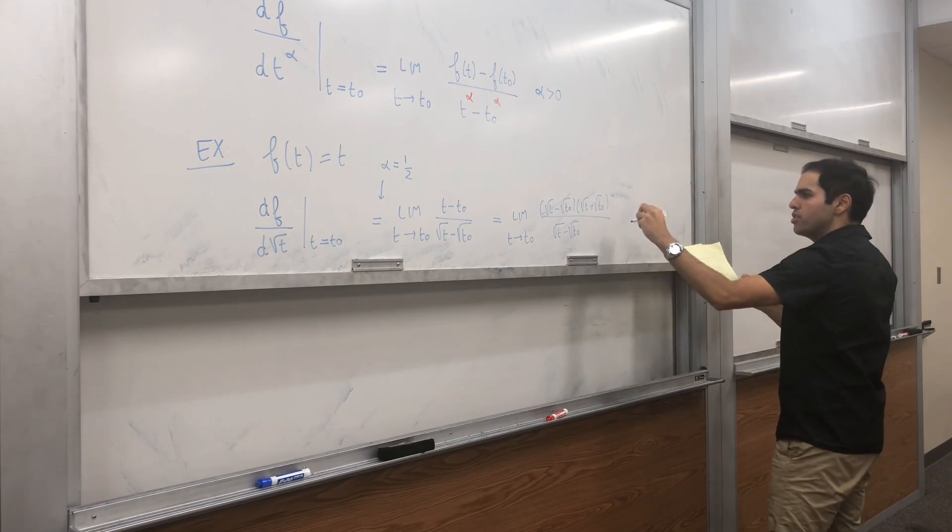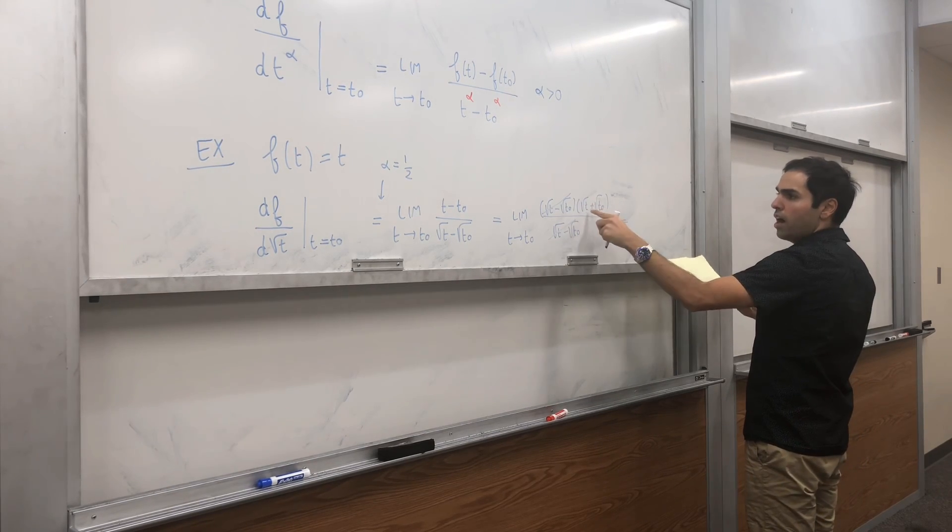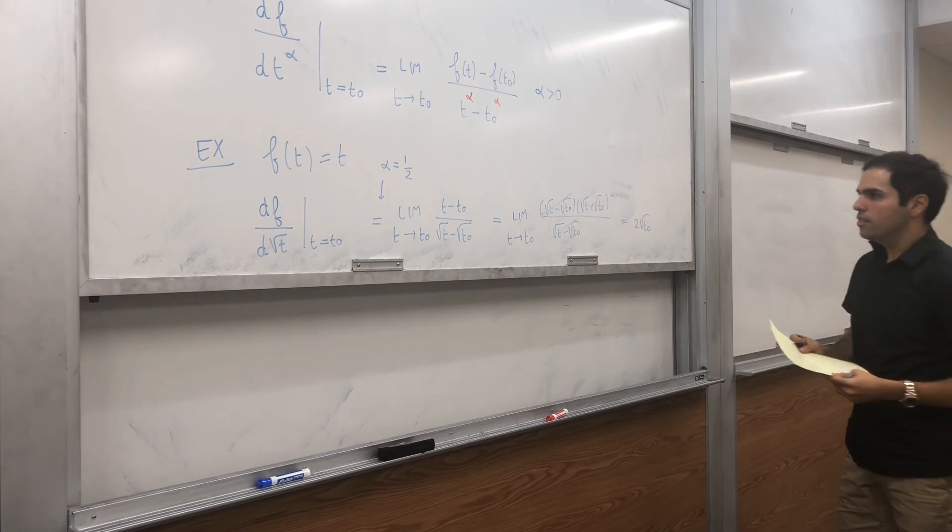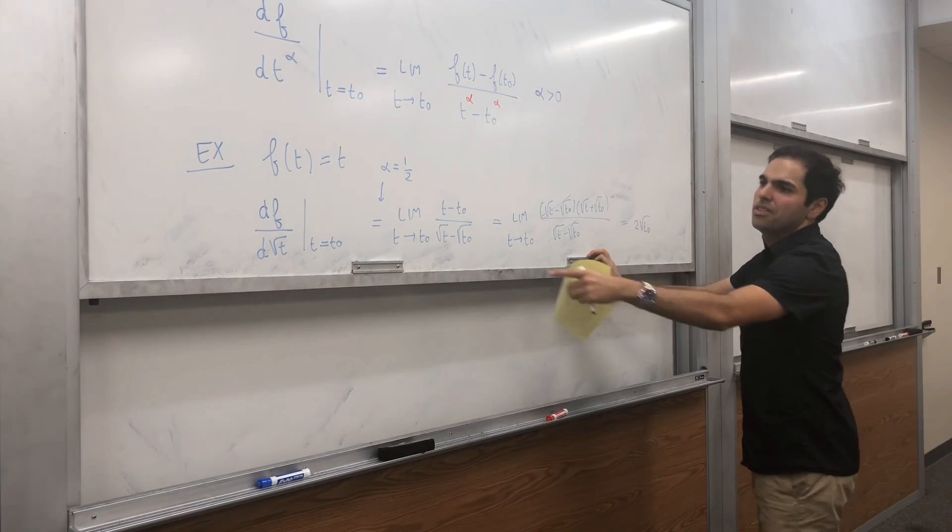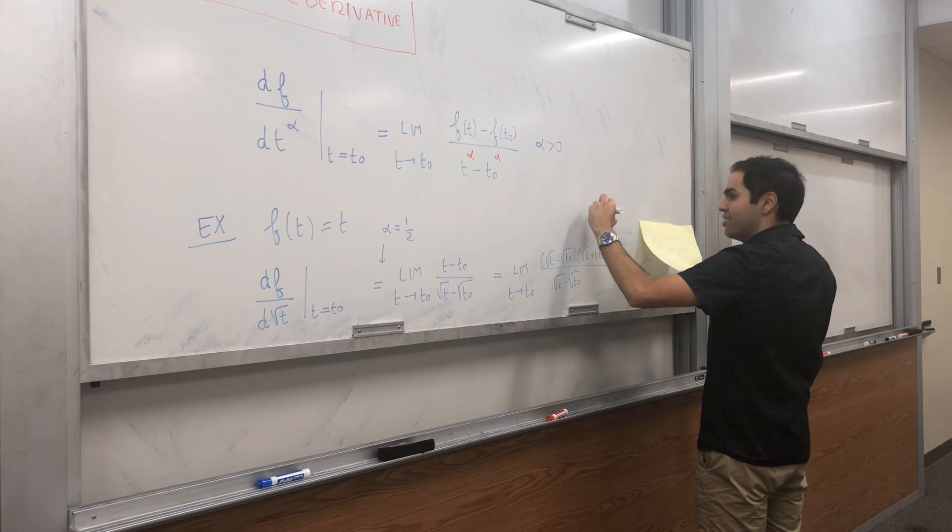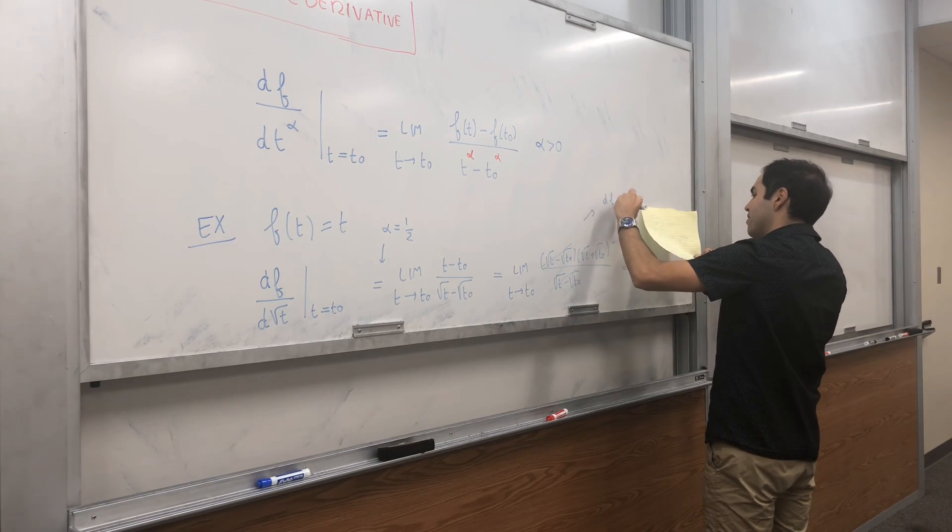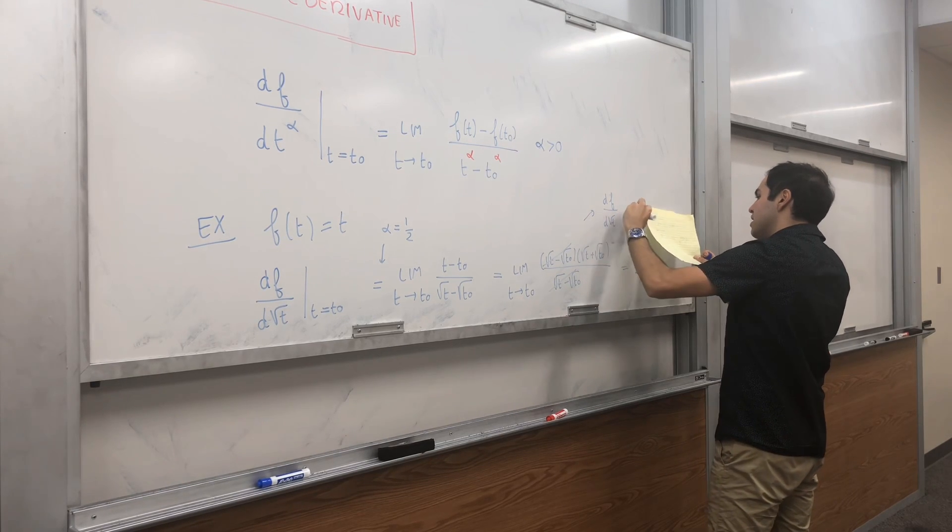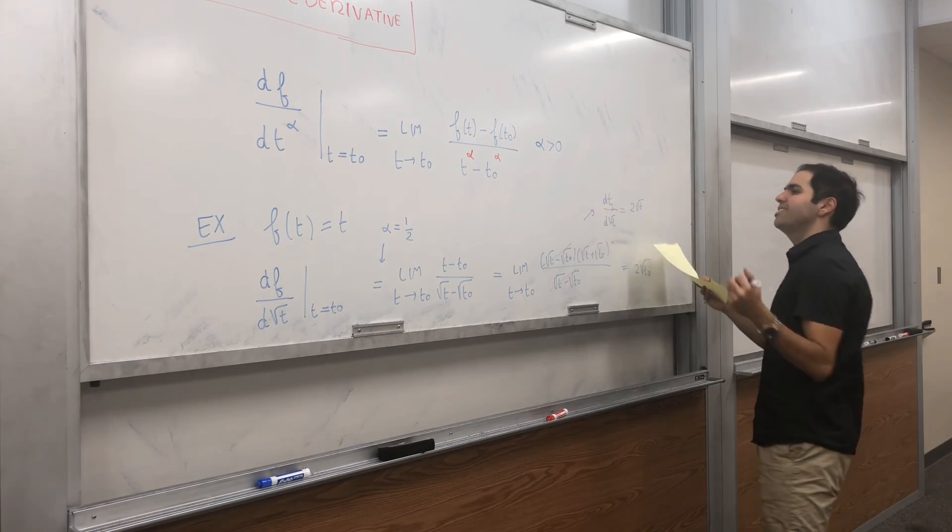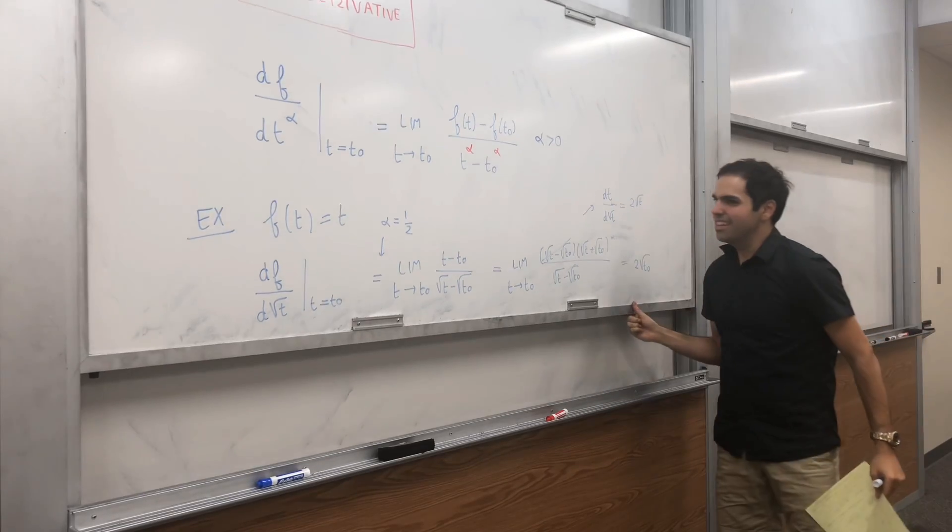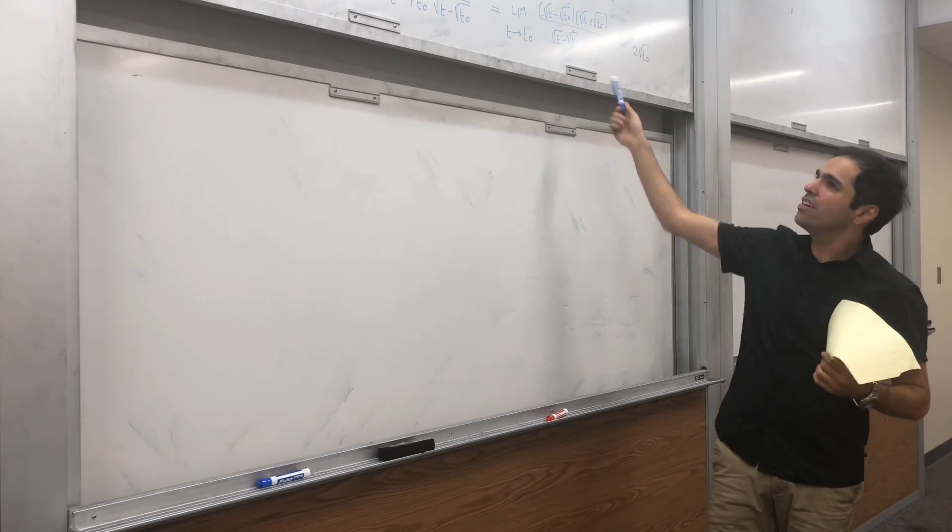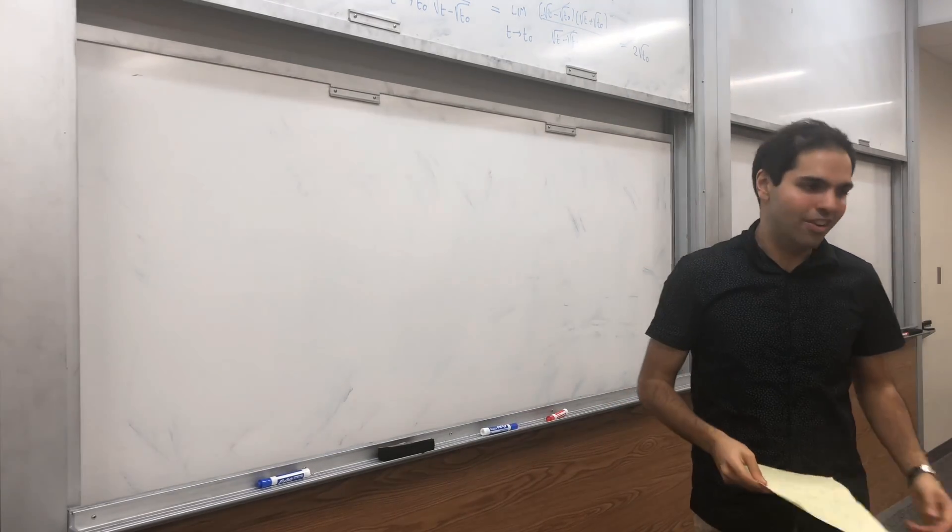This disappears, and you're just left with square root of t naught plus square root of t naught, which is two square root of t naught. In other words, the derivative of f with respect to square root of t is just square root of t. So, df over d square root of t is just two square root of t. And careful, again, not quite the same as fractional derivative because I think for the half derivative, you have some gamma function appearing.